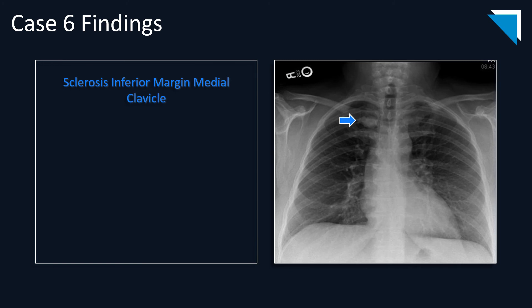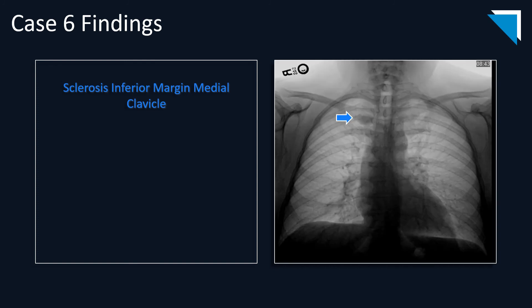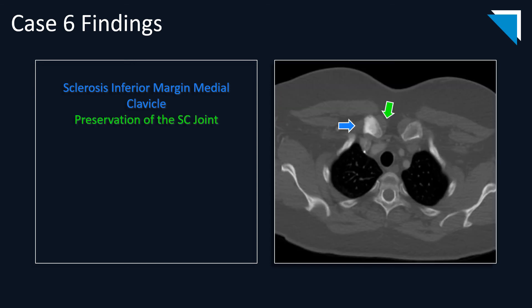The last case is a 45-year-old female presenting with right-sided sternoclavicular joint pain. On the radiograph, there is sclerosis along the inferior margin of the clavicular head. On an inverted radiograph, you can see sclerosis within the inferior margin of the right clavicular head. On axial CT, there is sclerosis along the inferior margin of the right clavicular head with notable preservation of the sternoclavicular joint.